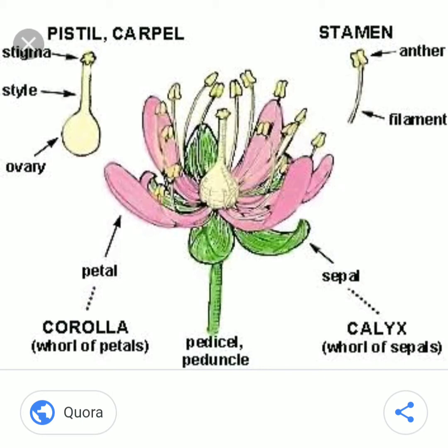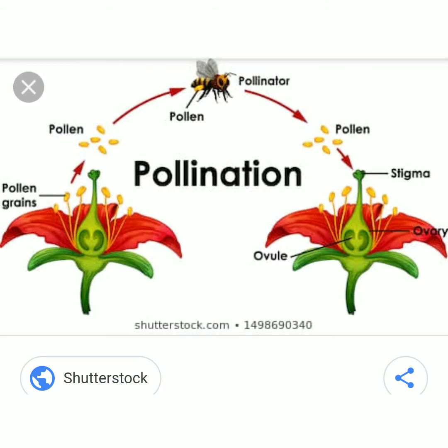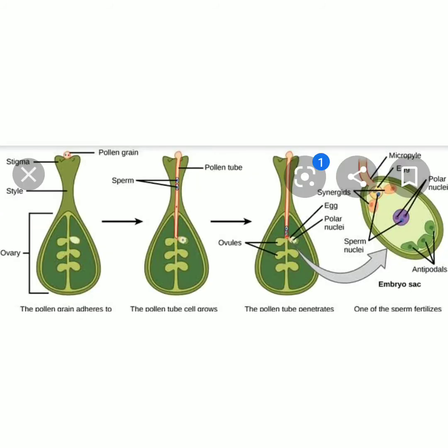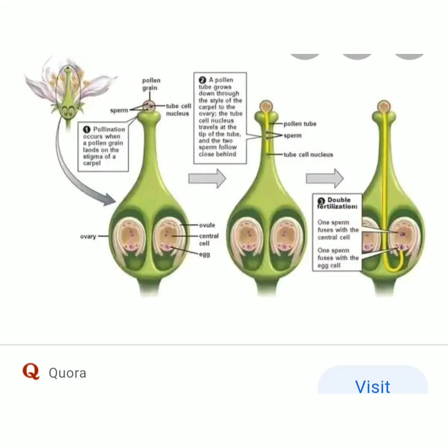The pollen grains from anthers fall on the stigma of gynoecium. This process is called pollination. After pollination, pollen grains develop through the style and reach the ovary, then fuse with the ovule. This process is called fertilization.